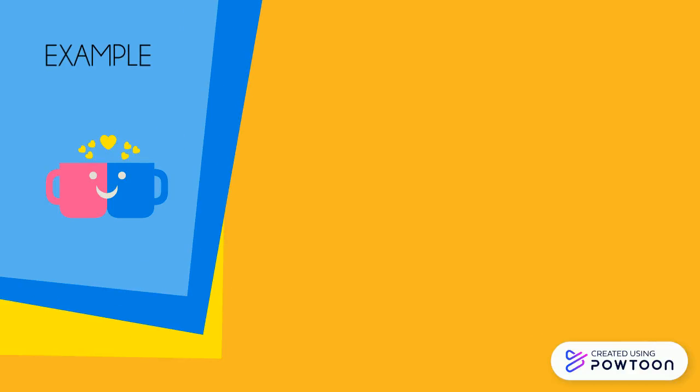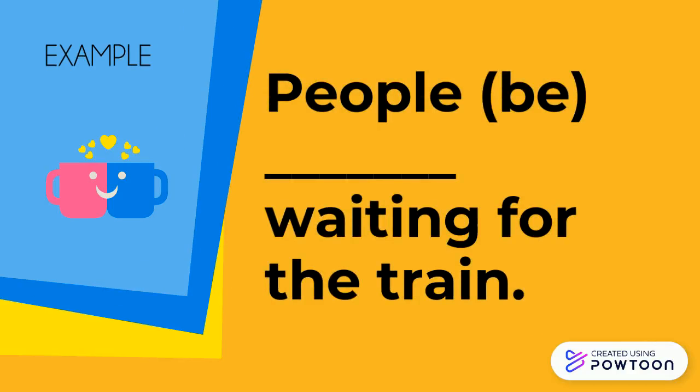Another example: People be waiting for the train. People pertains to two or more subjects, so the correct form of the verb is are.